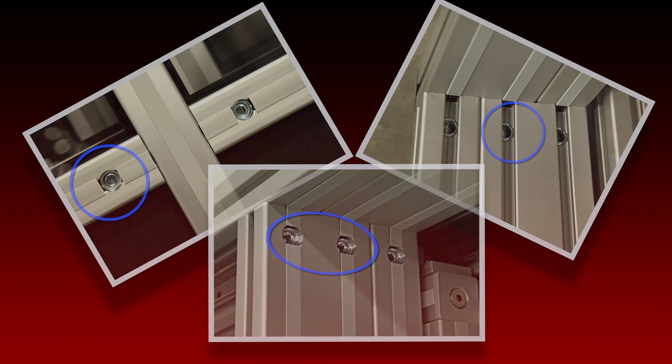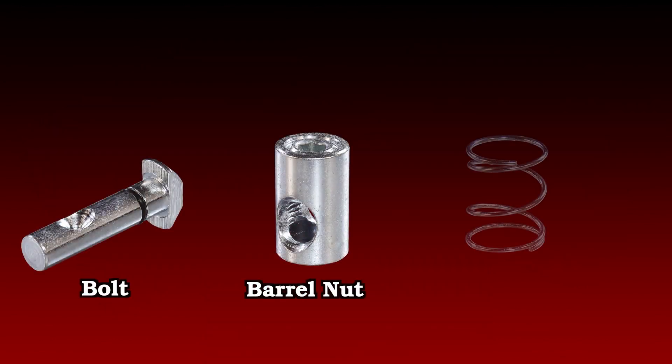Now the central connector comes in three parts. You have the bolt, the barrel nut, and the spring.